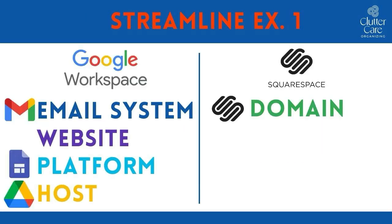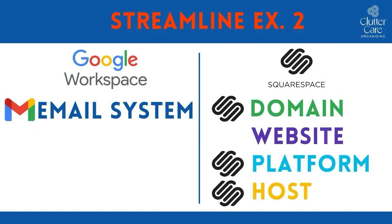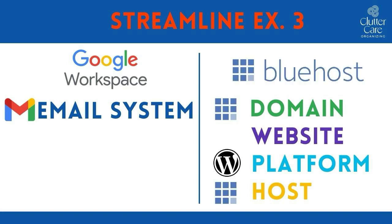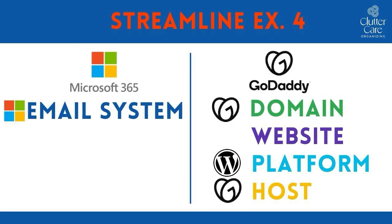One example would be if you wanted to use Google Workspace as your email and business systems, then you could also create your website on Google Sites, host it in your Google Drive, and purchase your domain name from Squarespace. Another example is if you'd like to use Google Workspace as your email and business systems, then you could purchase your domain name from Squarespace, use Squarespace as your website platform, and Squarespace as your website host. Another example is if you'd like to use Google Workspace, you could choose Bluehost to purchase your domain name and host your website, and then use WordPress as your platform. A final example is using Microsoft 365 email, purchasing your domain name through GoDaddy, using WordPress as your website, hosting your website at GoDaddy, and getting your email system through GoDaddy as well.